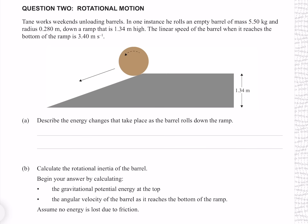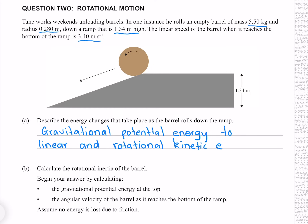Question 2. Tane works weekends unloading barrels. He rolls an empty barrel of mass 5.50 kg and radius 0.280 m down a ramp that is 1.34 m high. The linear speed of the barrel when it reaches the bottom is 3.40 m/s. Describe the energy changes as the barrel rolls down the ramp. At the top, the barrel has gravitational potential energy, which is converted to linear and rotational kinetic energy.